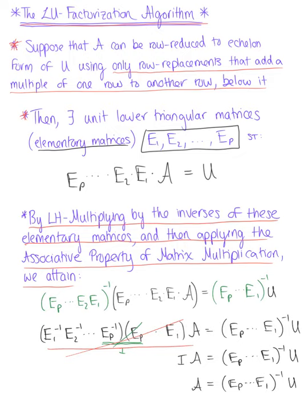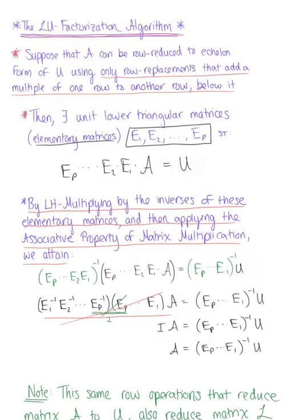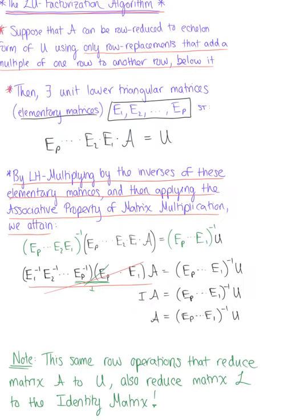The identity times A simply becomes matrix A, which is equal to the inverse of the sequence of our elementary matrices times U. We can now define this as the lower triangular matrix L times U, where L is equal to that inverse of the sequence of our elementary matrices.